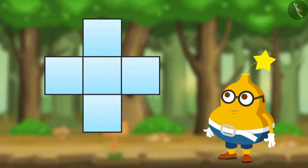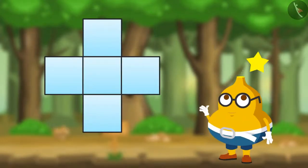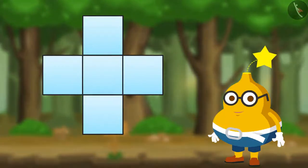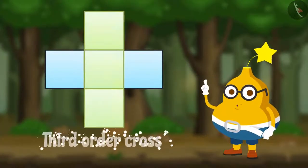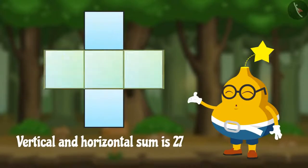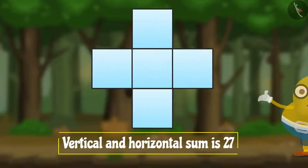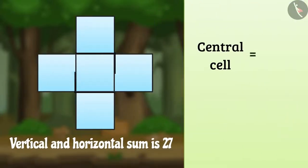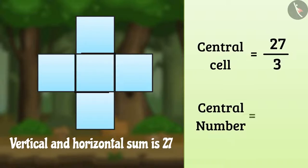Like you, Fruity is also trying to solve the puzzle. After some time, Fruity says, This is a Third Order Cross. Its vertical and horizontal sum is 27. So we can find its central cell by dividing 27 by 3. Hence, the central number is 9.